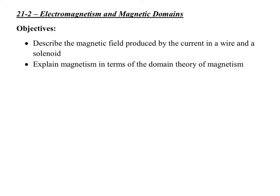In this section, we're going to relate electricity and magnetism, and specifically talk about electromagnetism. We're going to talk about the magnetic field that's produced from a wire that carries a current — that's the first thing. Second, we're going to talk about domain theory, which is a very simple thing to understand.